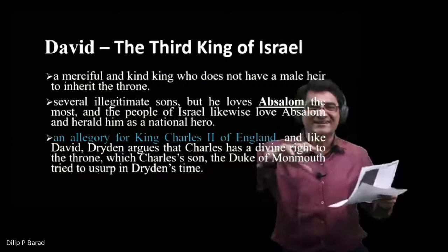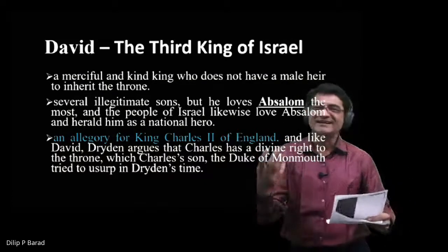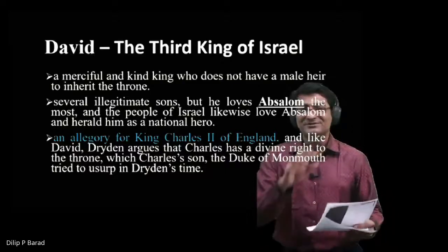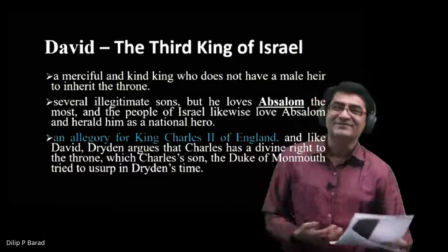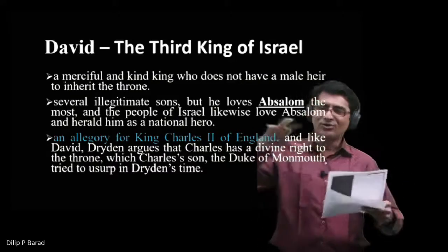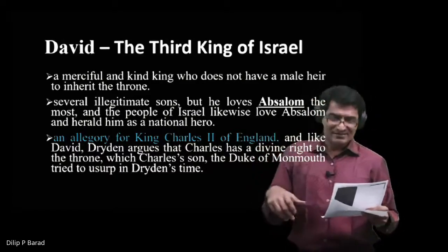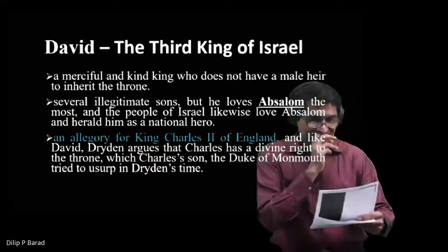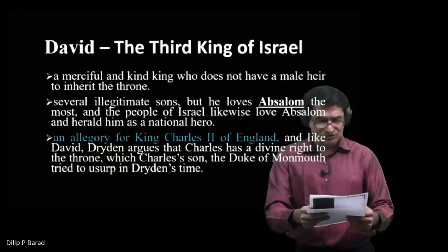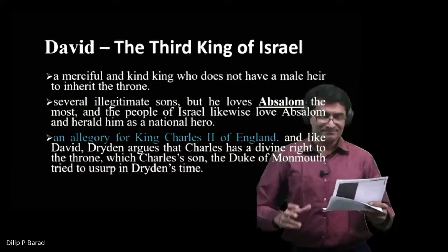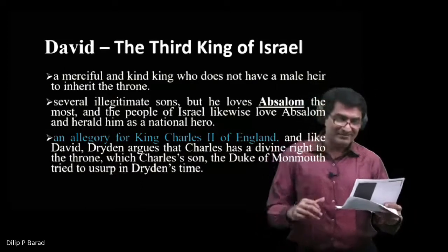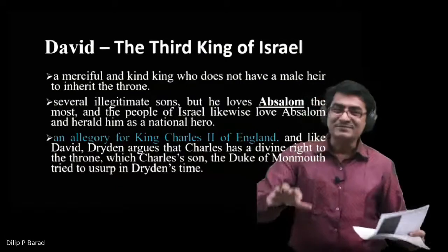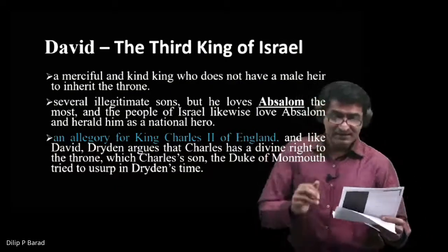You can see the double-edged sword of the satire — Dryden wants to protect Charles II and King David, but the things about these people are such that many people today may find it troublesome. David also has several illegitimate sons, but he loves Absalom the most, and the people of Israel likewise love Absalom and herald him as a national hero.